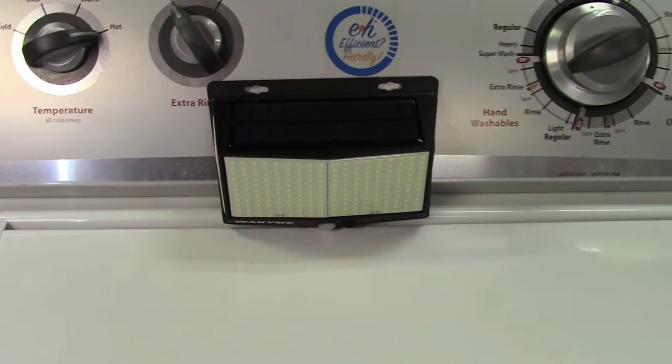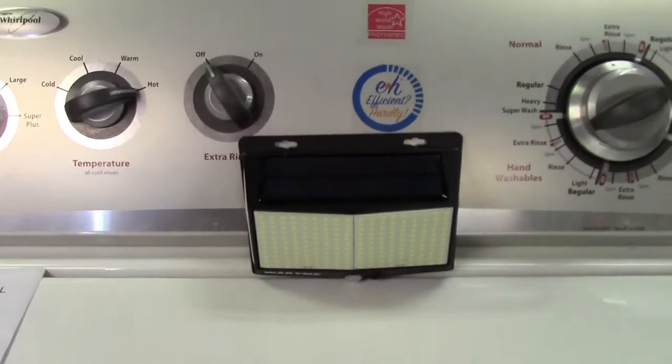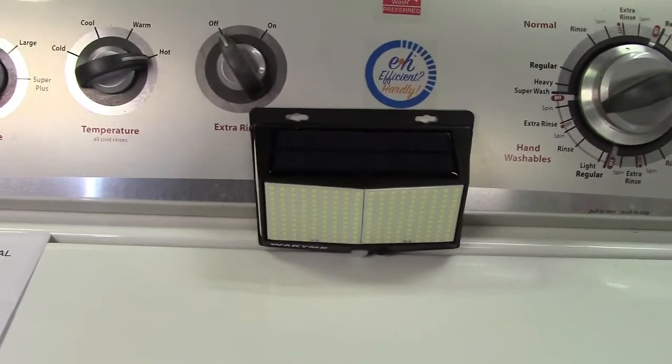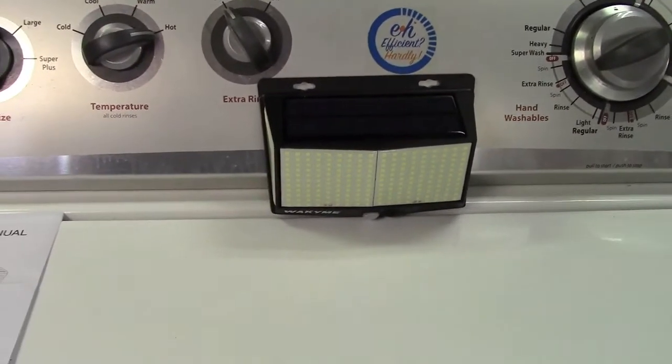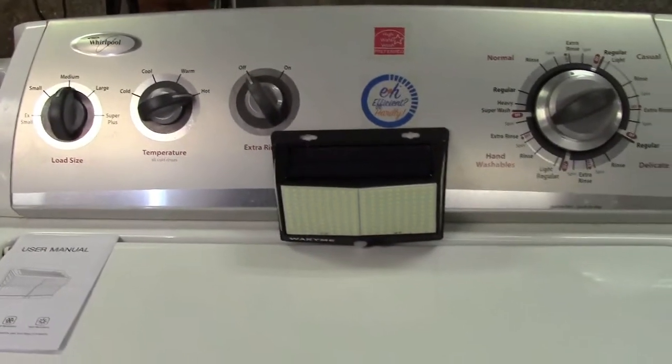And of course, these lights are IP67 waterproof, so they can be outside in the rain, in the snow. It's fine. Nothing to worry about. They're completely sealed from the elements like that because they are meant for outdoor use.